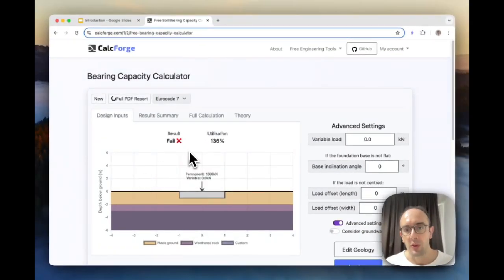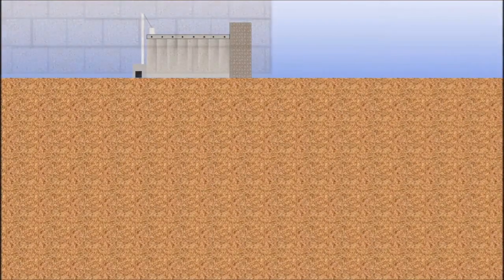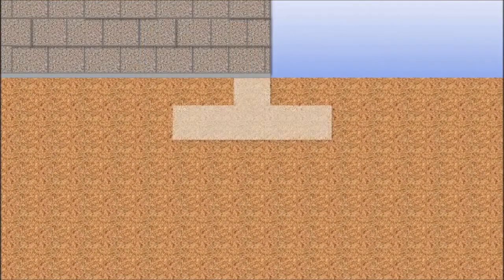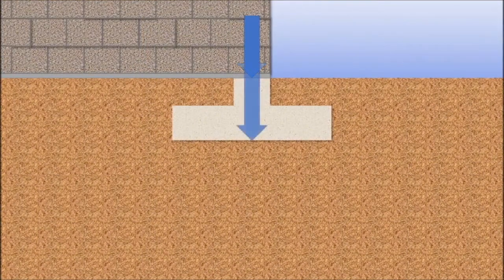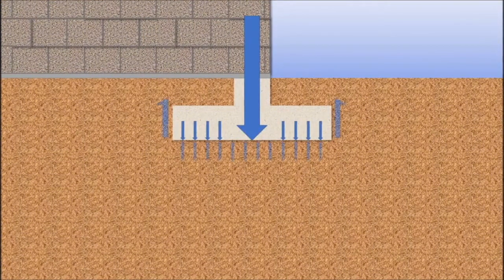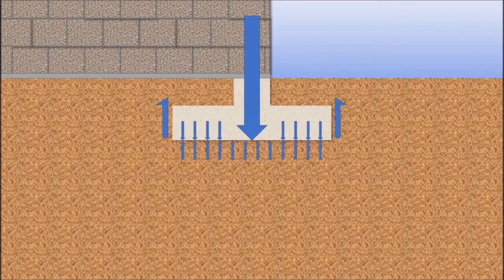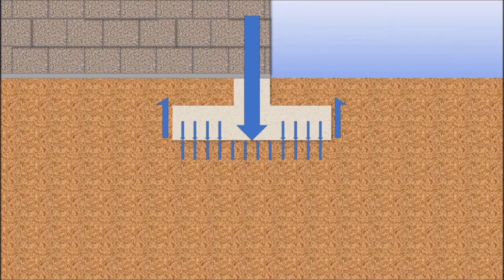Now on to the theory. Bearing capacity is the maximum pressure soil can support without failure. Geotechnical engineers use their understanding of bearing capacity to design systems to safely transfer the loading from structures into underlying soils. The loading produces compressive and shear forces in the soils. If the loads are large enough, the shear force induced in the soil will become higher than the shear strength in the soil, resulting in failure.